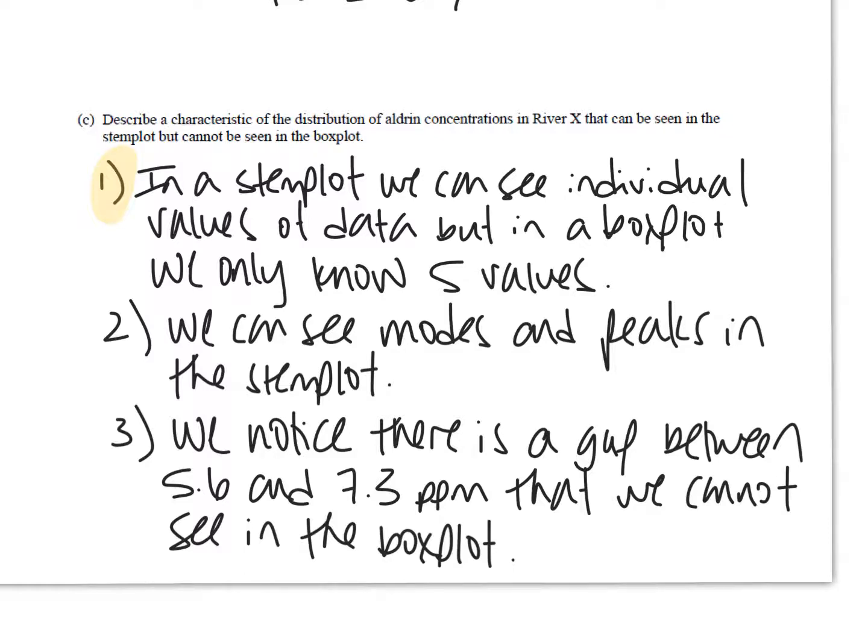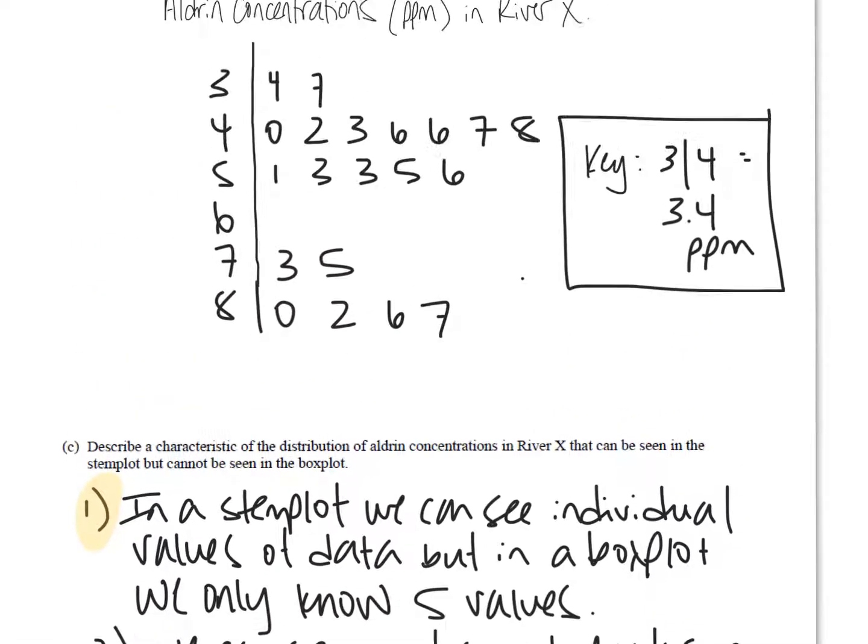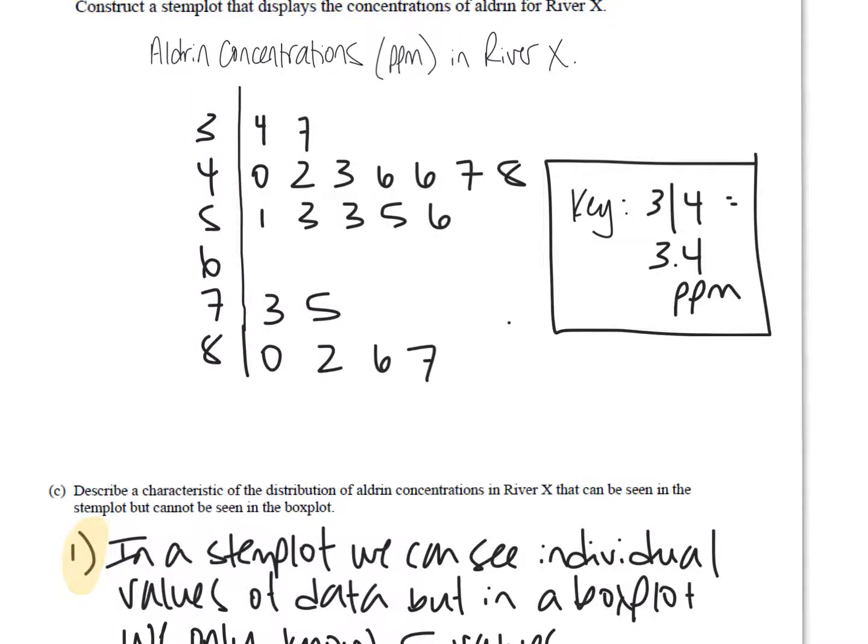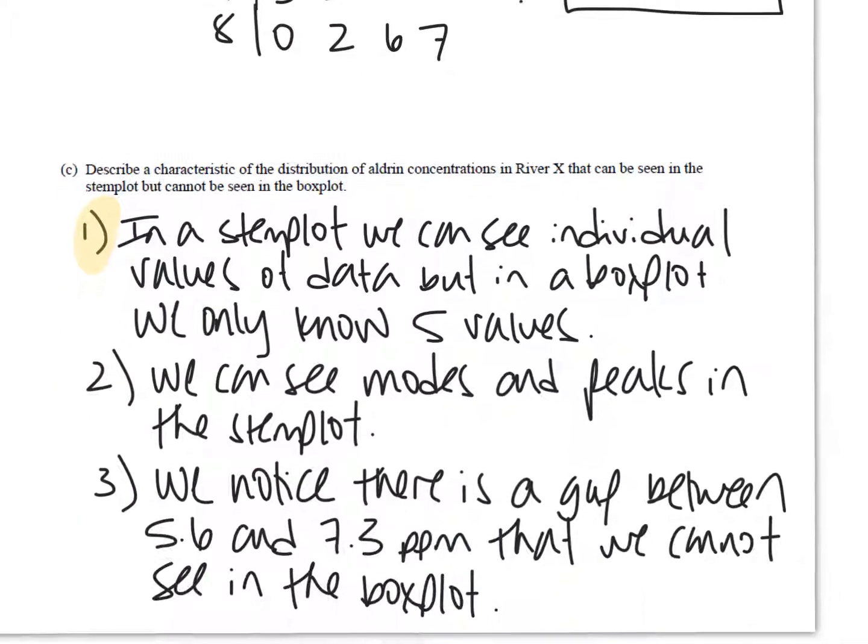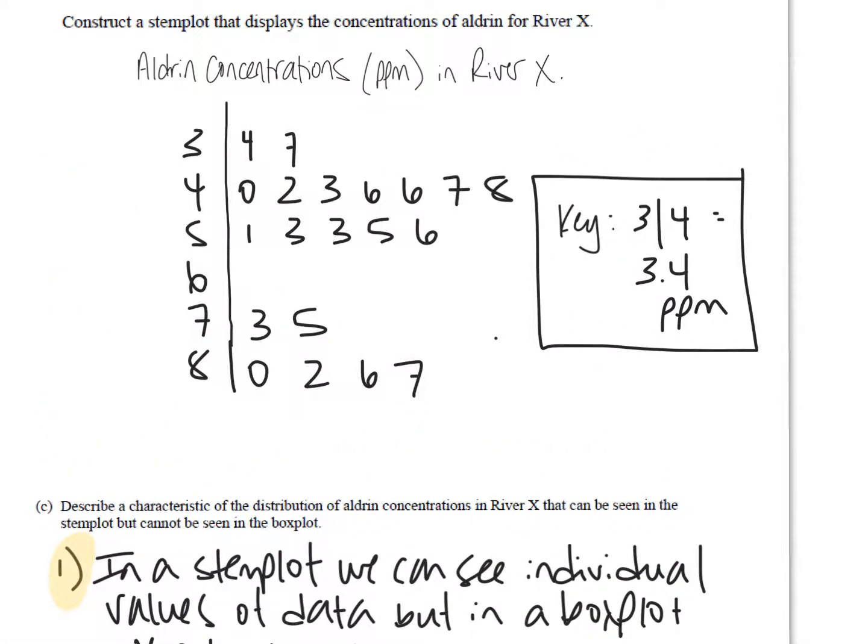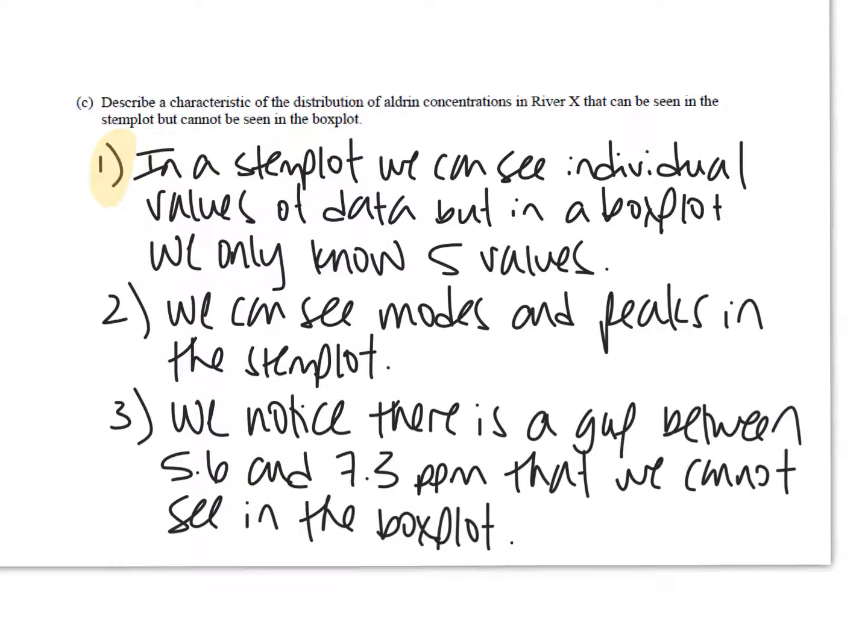A couple other things to keep in mind, number two, you can see modes and peaks in the stem plot, but you cannot see those in the box plot because it's just all connected with boxes and whiskers, right? So in terms of modes up here, it looks like we have two different 5.3s, we have two different 4.6s, so those are two different modes for this distribution. We can see that we have a peak in the 4s, that's the 4s have the most number of concentrations. And same thing for number 3, similarly, we notice that there's a gap between 5.6 and 7.3. You can't tell if there's any gaps at all in box plots, but look, we had no aldrin concentrations whatsoever that started with a value of 6, 6 point anything. So those are all things to be keeping in mind. Box plots tell us a lot of information, but stem plots are better in these respects because it gives you more information.